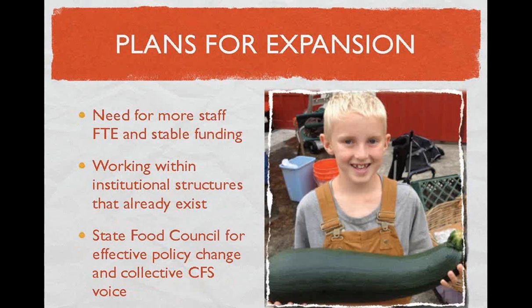Plans for expansion — we're definitely looking at the need for more staff, especially full-time employed staff and stable funding. I like working within the institutional structures that already exist. With Extension in Oregon, we have a four-county region, and it makes a lot of sense that if these community food system groups can work within something like Extension, it gives us a lot of strength and breadth in the audiences we can reach.